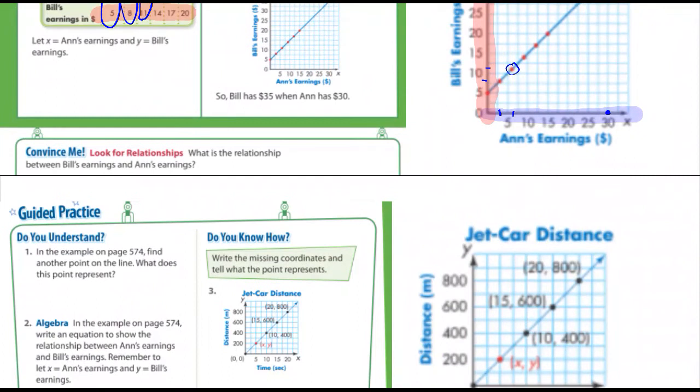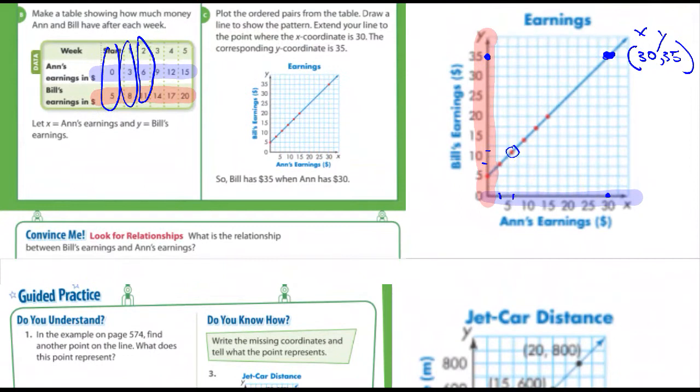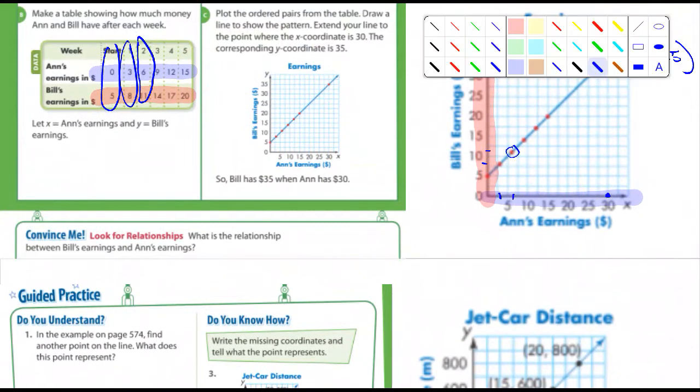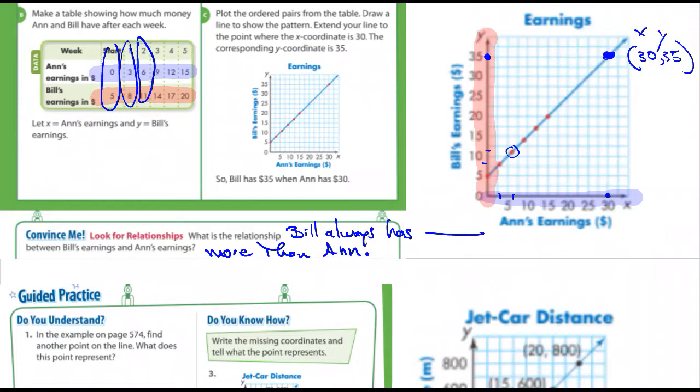It says, what's the relationship between Bill's earnings and Ann's earnings? Well, if you don't see it, let me just tell you, Bill always has... And I'll let you guys answer that question. If you look at it for a minute, you should be able to see it pretty easily.